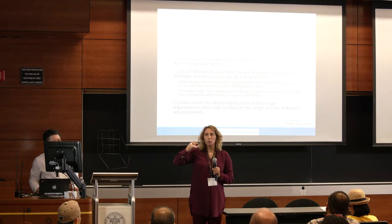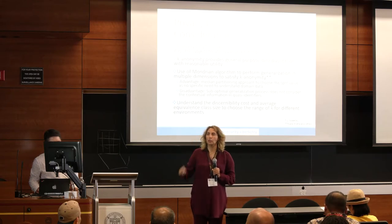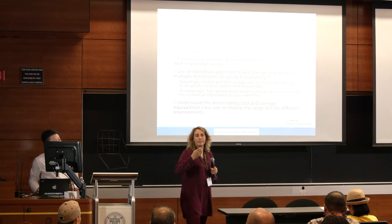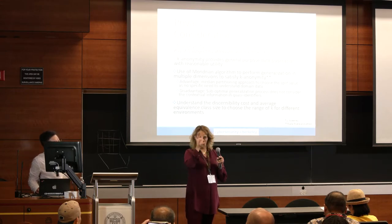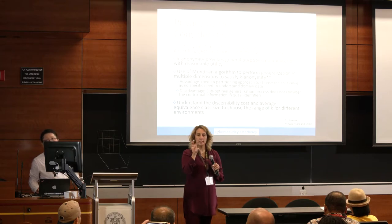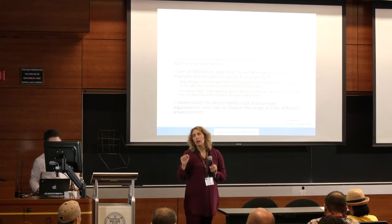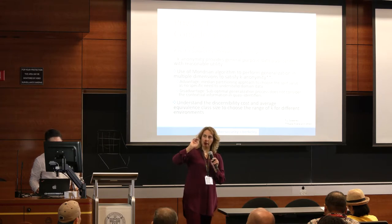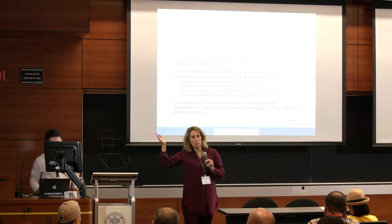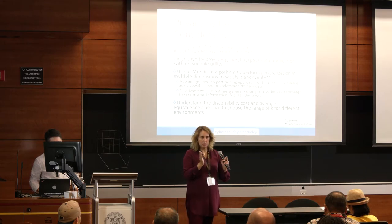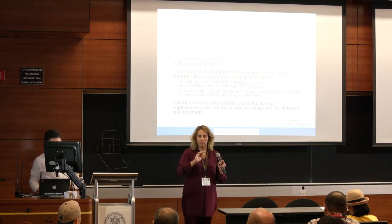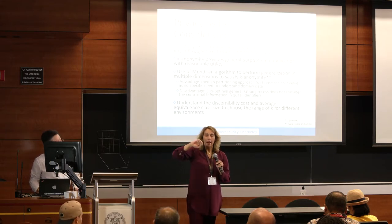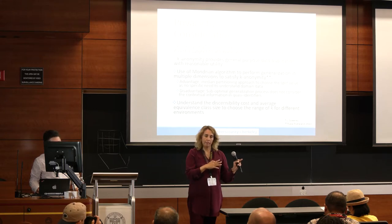Another important measure is the discernibility cost — the average size of an equivalence class, which is the group of records sharing the same attribute values. You want to make sure the discernibility cost is not too high because that indicates a poor balance between utility and privacy. The higher the discernibility cost, the less utility you have; the lower it is, the more utility but less privacy.